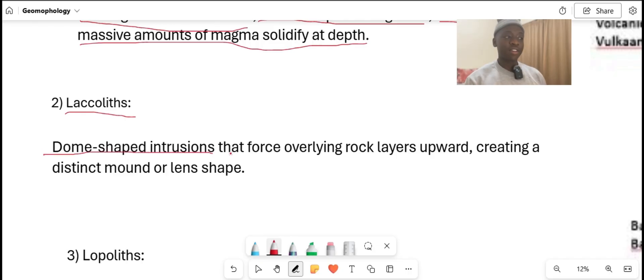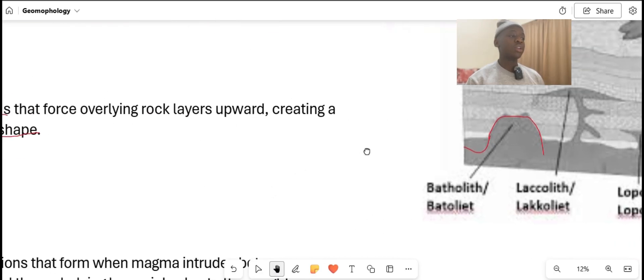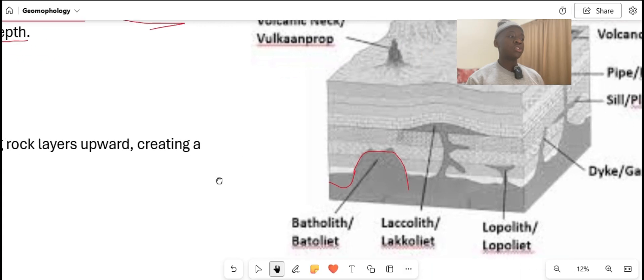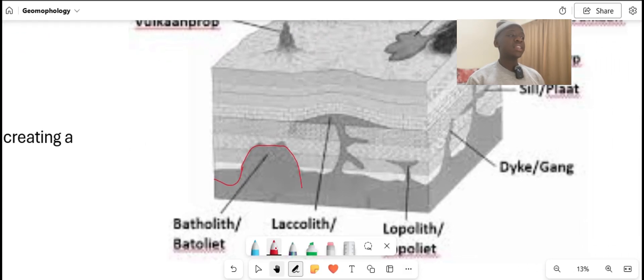The laccolith is a dome-shaped intrusion that forces overlying rock layers upward, creating a distinct mound or lens shape. So dome-shaped intrusions are laccoliths. Let me show you an example of laccolith.